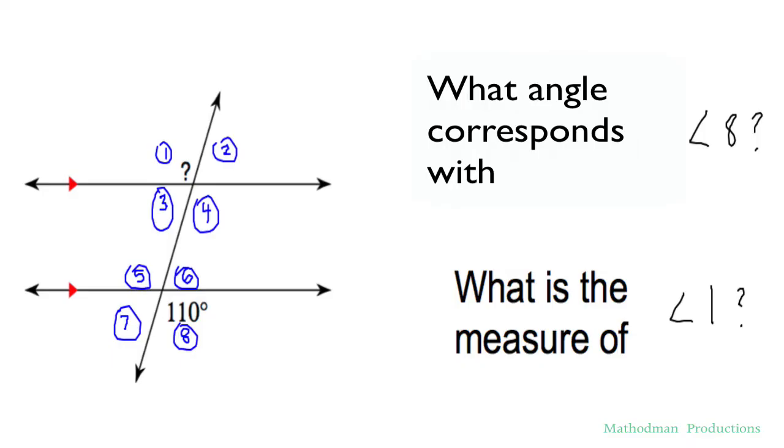Let's go over this first slide right here. What angle corresponds with angle 8? What is the measure of angle 1? What I like to do in the beginning is to highlight my transversal. That way it's a little easier to see which angles correspond with each other. Notice we're also given parallel lines. My transversal cuts through parallel lines. You can tell by the small little triangles. So that means that corresponding angles are congruent.